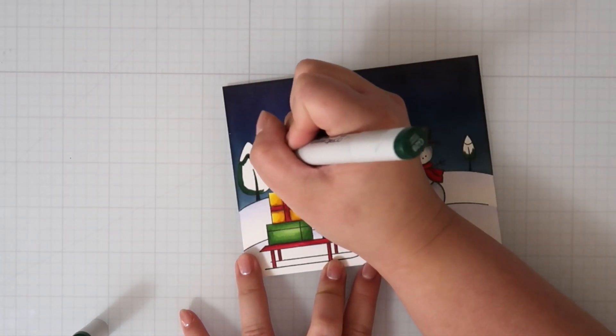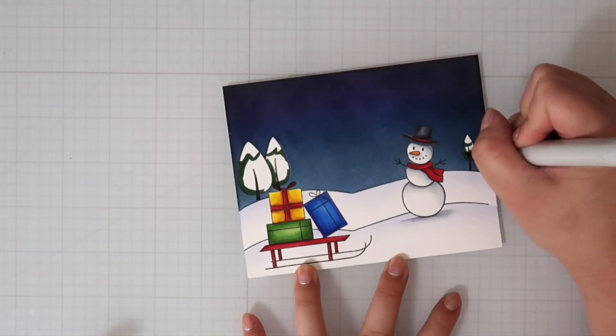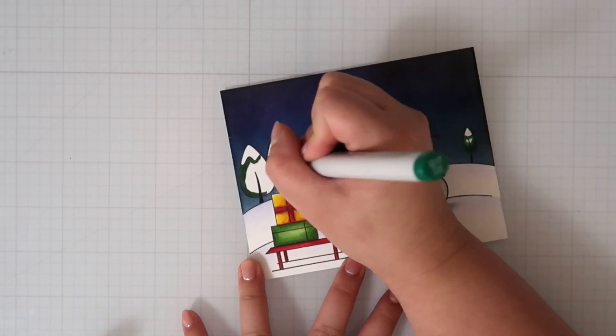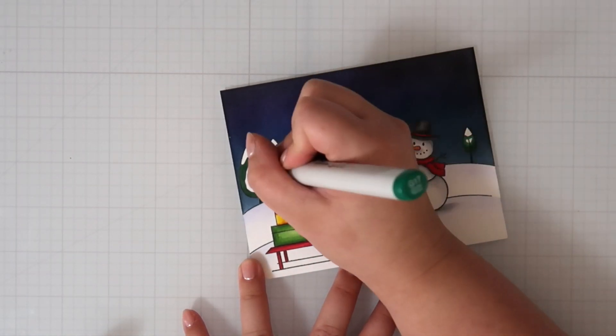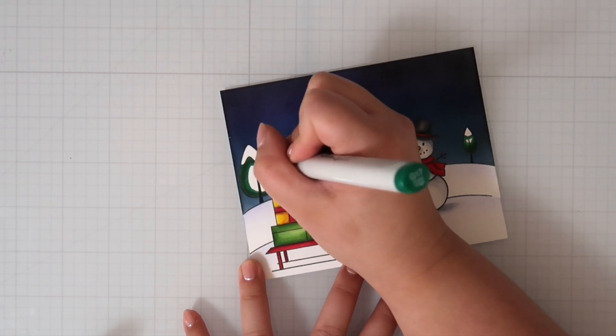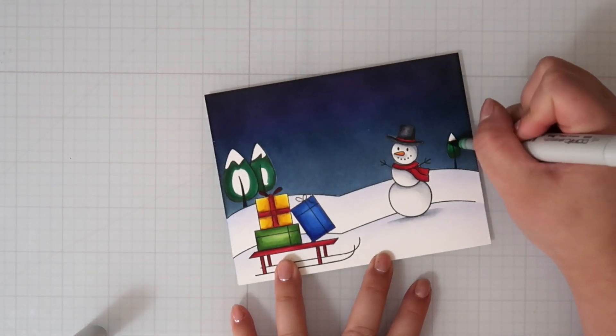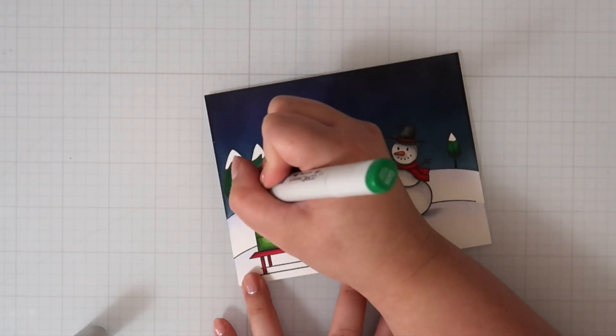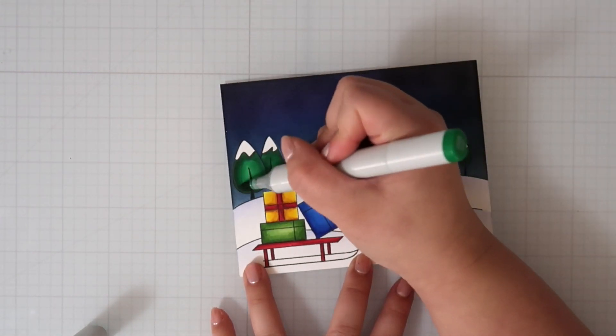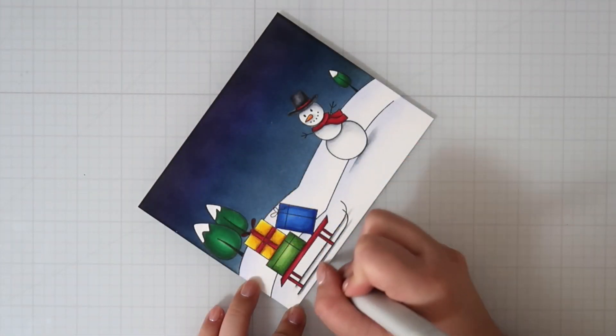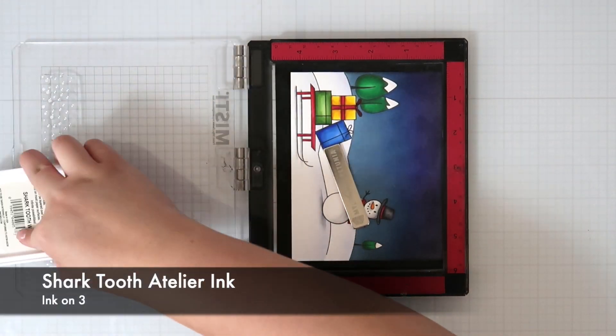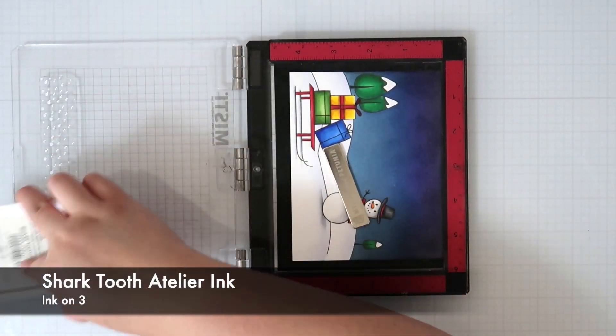Every time I do a scene card, when I stamp it out it feels like I'm coloring a page from a coloring book. I've thought about stamping out a bunch of images into a scene and putting them away, so whenever I'm in a creative slump, I can pull one out, color it, and make it into a card. Once I finish coloring, there's this stamp in the set that is falling snow, which is really cool.